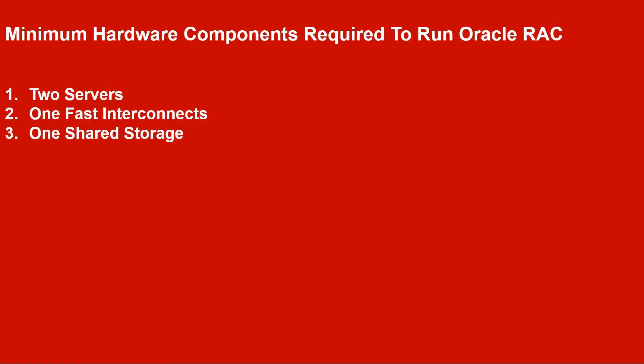These are the minimum hardware components required to run Oracle RAC. We need a minimum of two servers and one fast interconnect to connect these servers. As you can see, the minimum is two servers and the maximum is up to 100 servers.